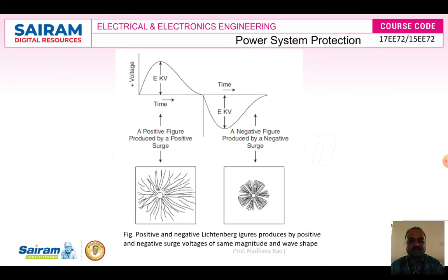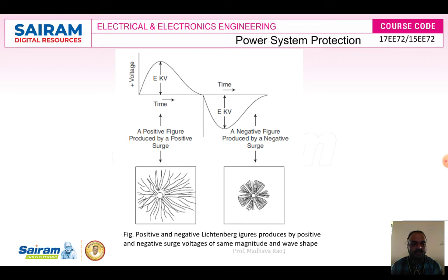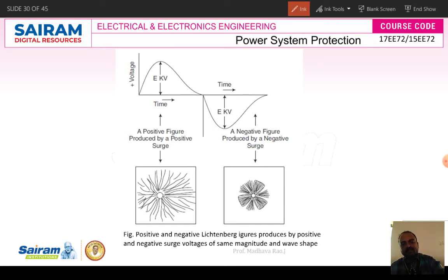Here we have some figures based on the clinodograph. Here voltage V is shown — you can see a sinusoidal voltage. Due to sinusoidal voltage varying every instant in positive and negative directions, positive and negative figures are produced. A positive surge will be elaborate (expanded) and a negative surge will be compressed. Due to positive voltage, a positive figure occurs; due to negative voltage, a negative figure occurs.